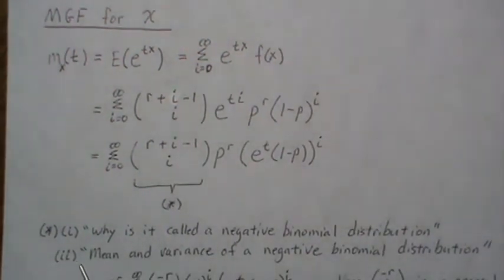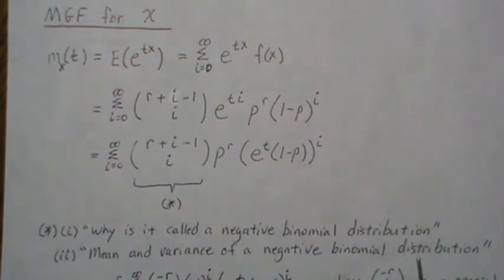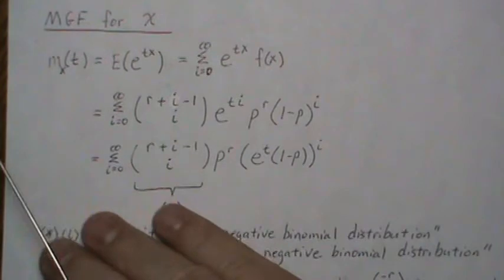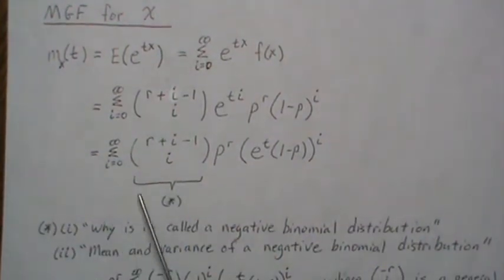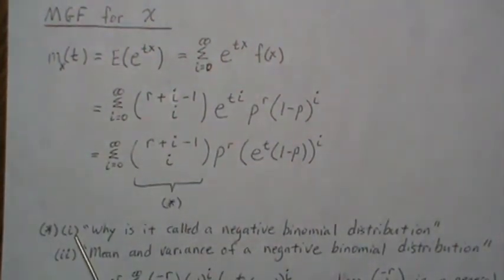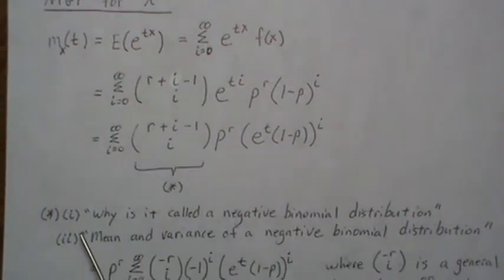Now this part two, mean and variance of a negative binomial distribution, you can watch that if you want more details on a negative binomial. But this next step is on the first point here.